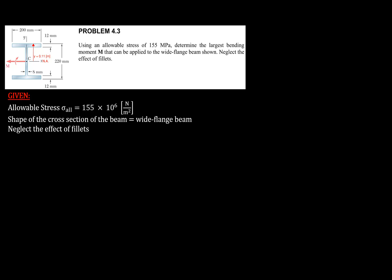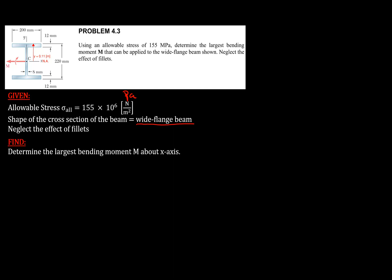In this problem, we are given that we can use an allowable stress of 155 megapascal. We are asked to determine the largest bending moment M that can be applied to the wide flange beam shown, and we are told to neglect the effect of fillets. The allowable stress is 155×10⁶ N/m², the cross-section is a wide flange shape, and we need to find the largest bending moment about the x-axis.